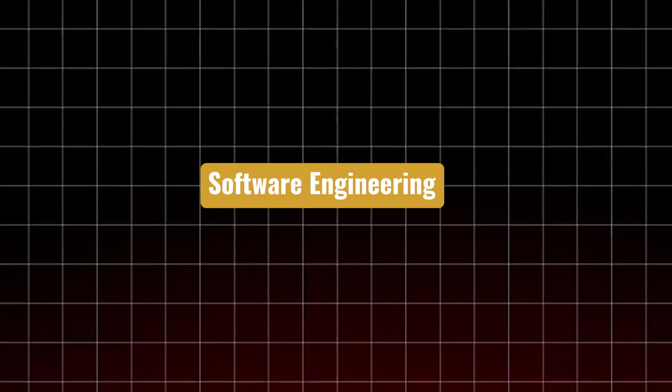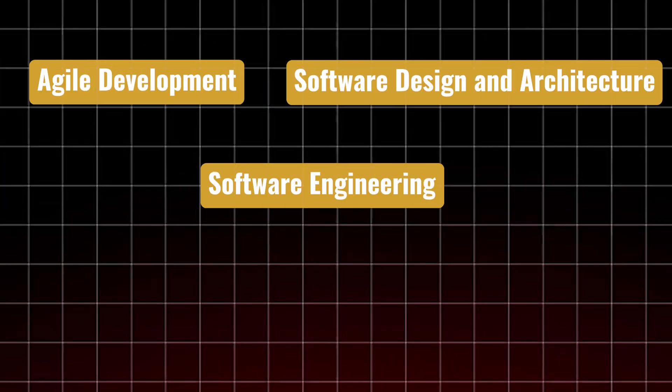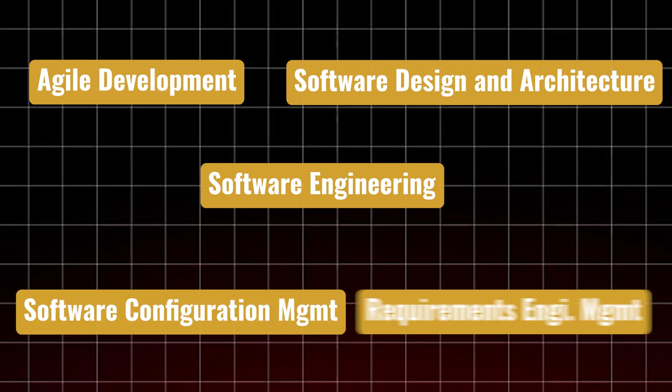Now we're done with MTech integrated and CSBS and moving to software engineering. My specialization is BTech CSE with software engineering. The specialization subjects in my batch started in second year. Subjects include software engineering, child development, software design and architecture, configuration management, and requirements engineering management.